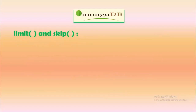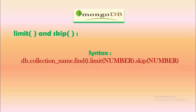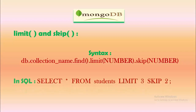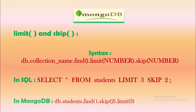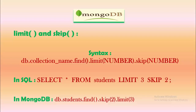We can also combine limit and skip in a single query. The syntax is db.collectionName.find().limit(number).skip(number). In SQL, this looks like SELECT * FROM students LIMIT 3 SKIP 2, meaning the first 2 rows are skipped and 3 rows are returned. The equivalent MongoDB query is db.students.find().skip(2).limit(3), skipping 2 documents and showing 3 documents after that.